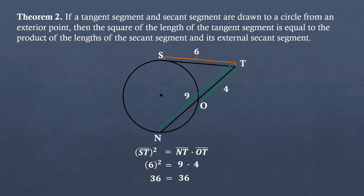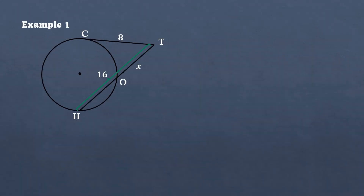This confirms that the square of the length of the tangent segment is equal to the product of the lengths of the secant segment and its external secant segment. Now let us have an example where there is a missing length — example number one. From the given figure, the tangent segment CT squared is equal to the product of the secant segment and the external secant segment.